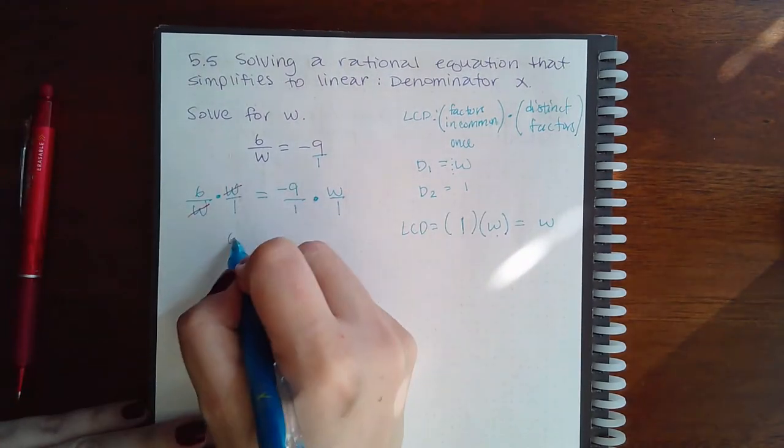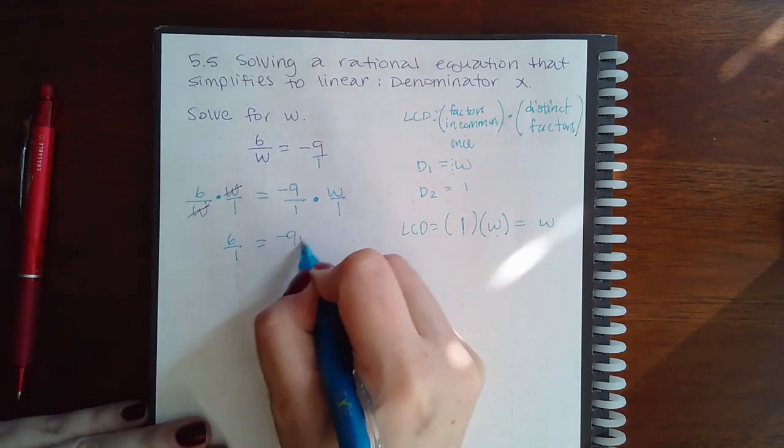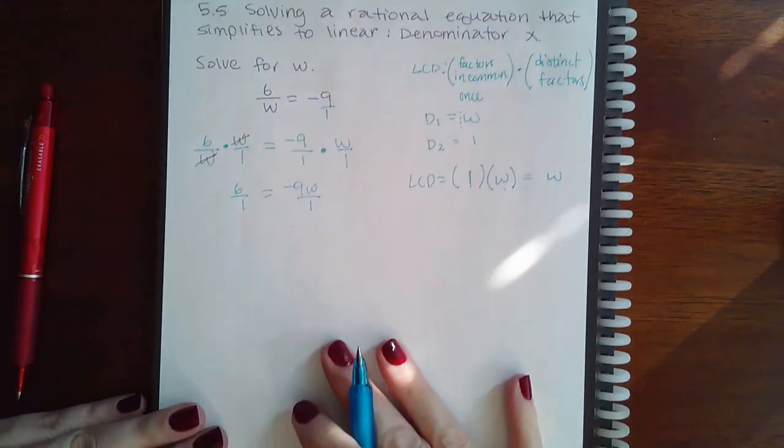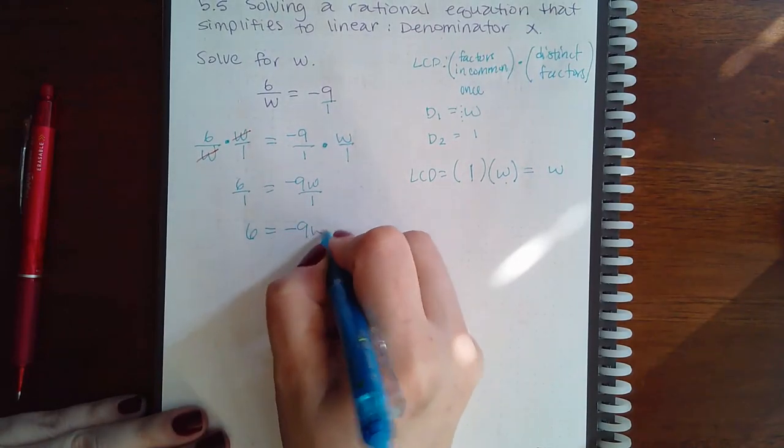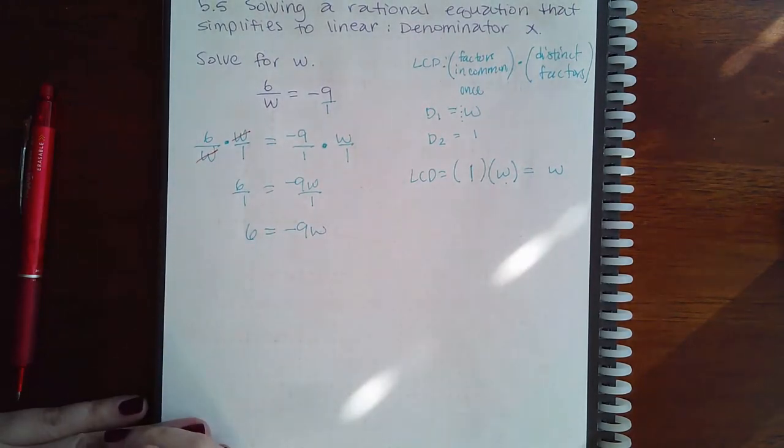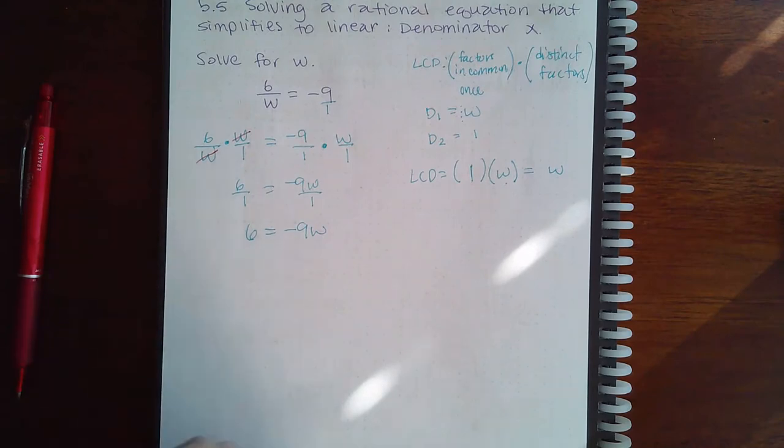So here I get 6 over 1, and over here I get negative 9w over 1, which is the same as saying the whole number 6 and the whole number negative 9w. And so then how do I resolve this resulting equation?